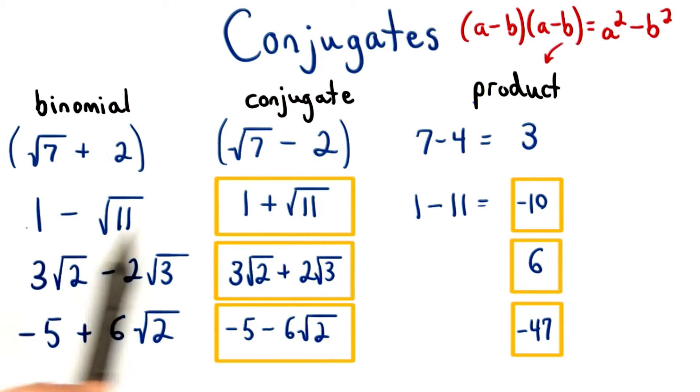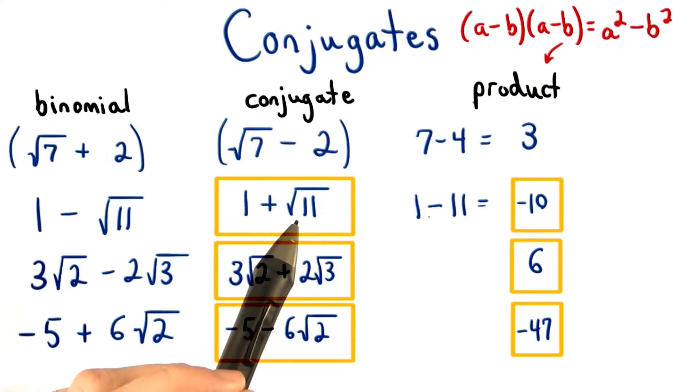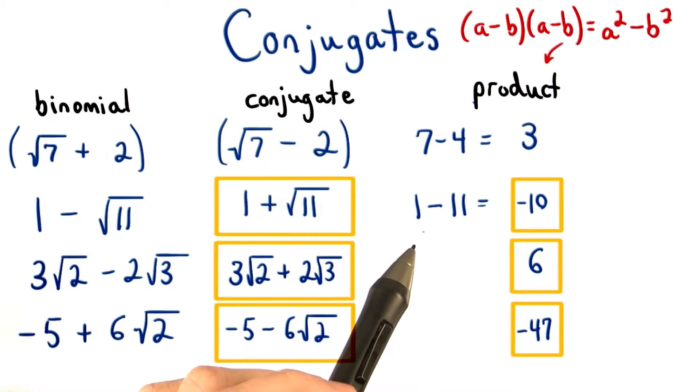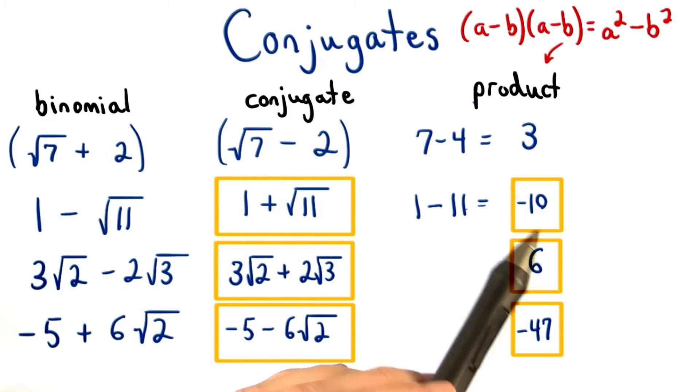So we can square a, which is 1 here, and square b, which is the root of 11. 1 squared equals 1, and root 11 squared equals 11. We find the difference of these squares, which is 1 minus 11, which equals negative 10.